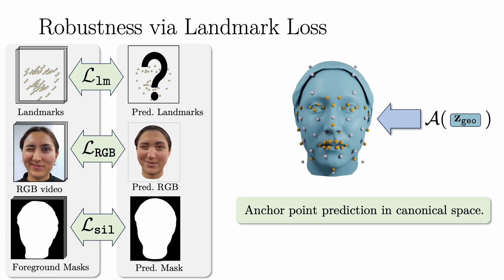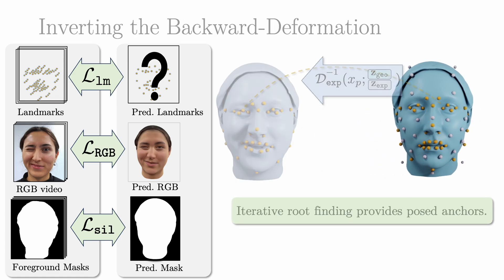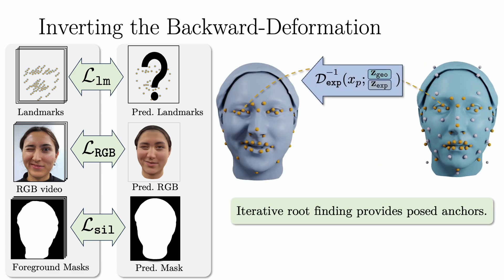We use the predicted canonical anchors to formulate a landmark loss for increased robustness. Using iterative root finding, we establish corresponding anchors in PoE space, which are finally projected onto the image plane.